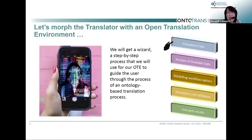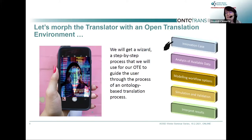Now we want to get this translator into a handheld system. There will be a software wizard — like the ones we all know when installing programs — that takes us step by step to reach the end. We want this step-by-step translation process to ask about the innovation case, what data we have, what modeling we want to do, and so forth. So how can I combine the translator with an open translation environment and ontologies?